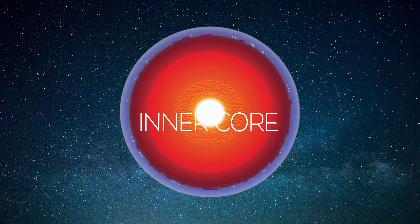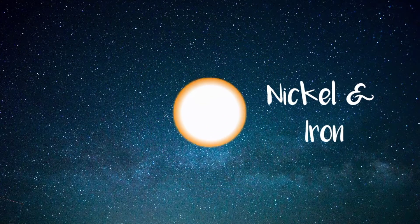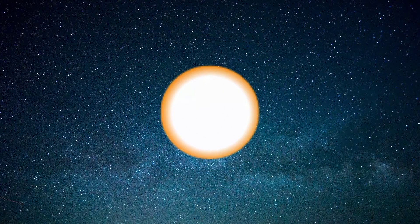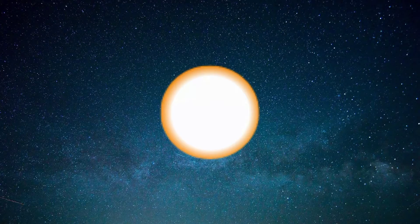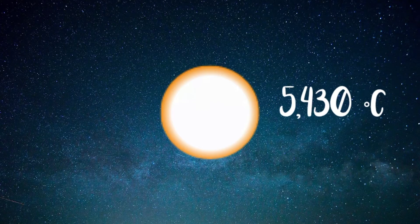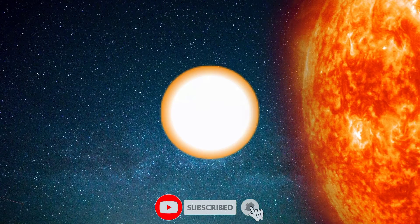Deep inside Earth, near its center, lies Earth's core which is mostly made up of nickel and iron. The temperature at the inner core's surface is estimated to be approximately 5,430 degrees Celsius, which is about the temperature at the surface of the Sun.